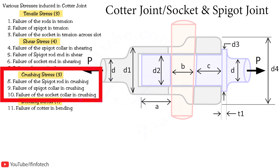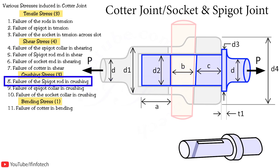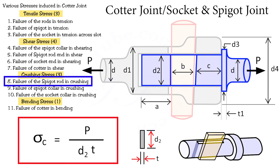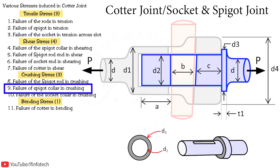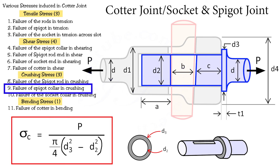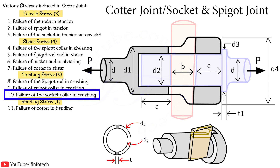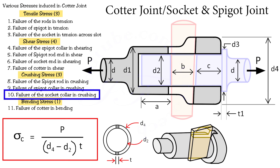The next stress is crushing stress. The failure occurs due to crushing stress at the diameter of spigot end, with the formula: load P divided by area of cross-section, i.e., diameter of spigot end d2 multiplied by thickness small t. The next failure occurs due to crushing stress at the outside diameter of spigot end collar: load P divided by pi by 4 times (d3 squared minus d2 squared). Next, crushing stress at outside diameter of socket collar: load P divided by (d4 minus d2) multiplied by thickness small t.